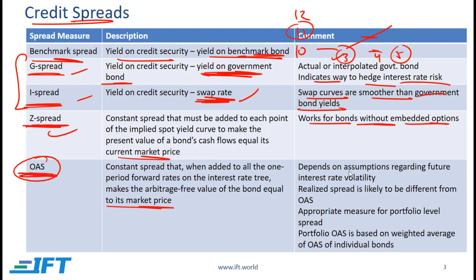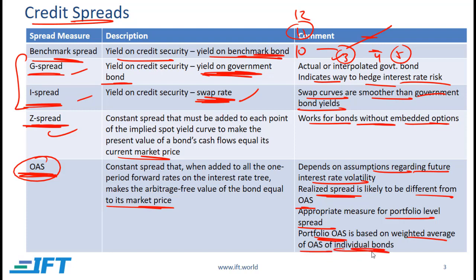The OAS depends on assumptions regarding future interest rate volatility. If the actual volatility turns out to be different from what was assumed, then the realized spread will be different from the OAS. This measure is appropriate at the portfolio level because portfolios will often have bonds with embedded options. The portfolio OAS is based on the weighted average of the OAS of individual bonds in a portfolio.